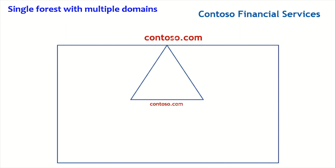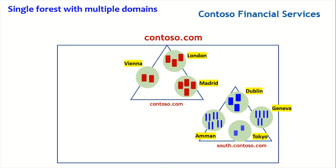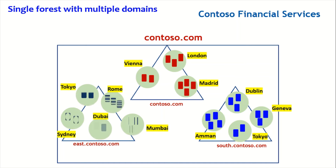For single forest with multiple domains, Contoso Financial Services has a forest called contoso.com with a forest root domain of contoso.com, which has its own Active Directory sites and domain controllers. The organization also has additional domains in the same contoso.com forest — say south.contoso.com with its own offices, domain controllers, users, computers, and devices — and possibly east.contoso.com with the same setup.